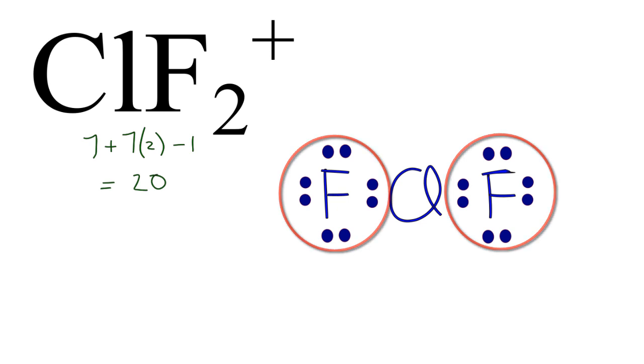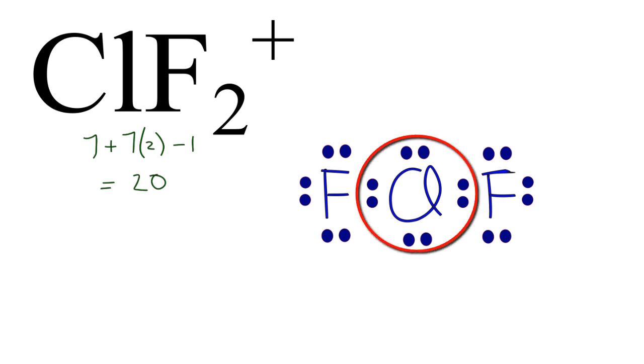Next we'll complete the octet on that central atom. We have four more valence electrons to use. So we do 18, and we've used all 20 valence electrons. In doing so we've completed the octet on the chlorine as well.